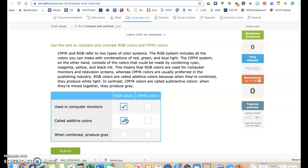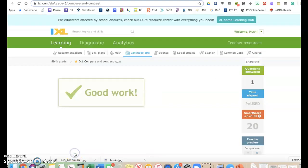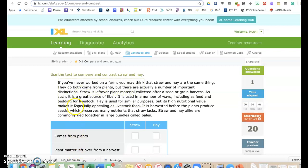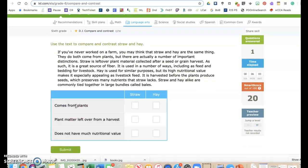RGB colors are called additive colors. So, this one's RGB again. When combined, produce gray. So, I'm looking for gray, and I found it right at the end, and that's CMYK. Okay. So, that's how you do it.